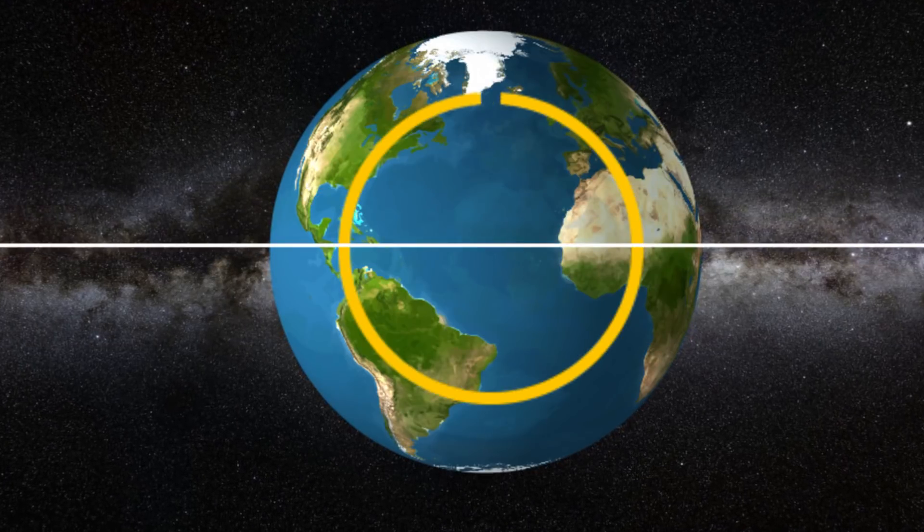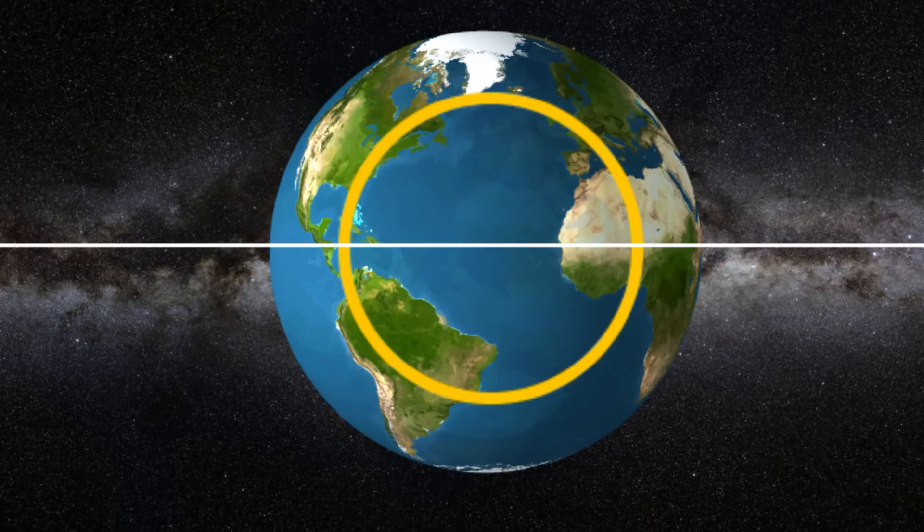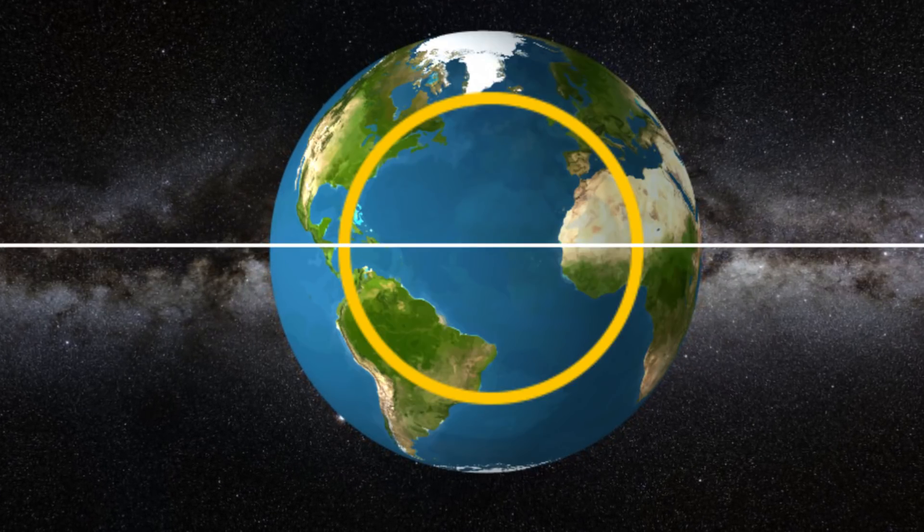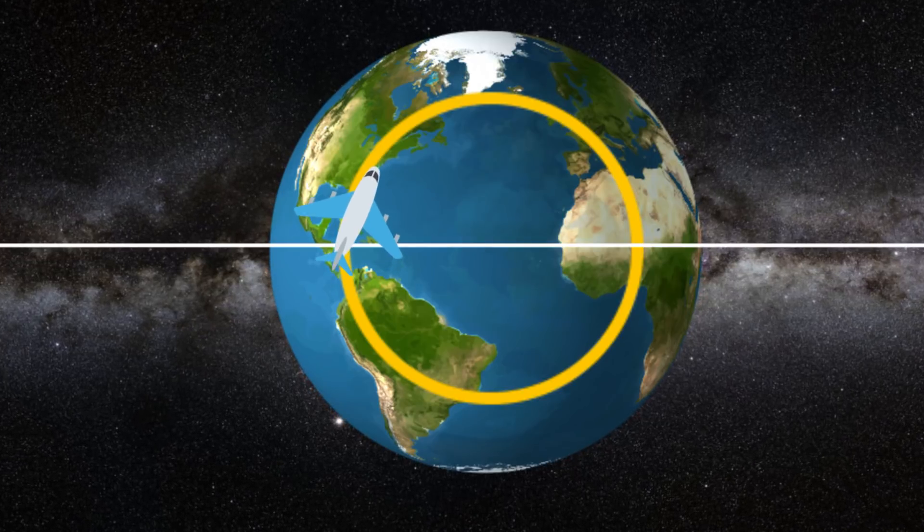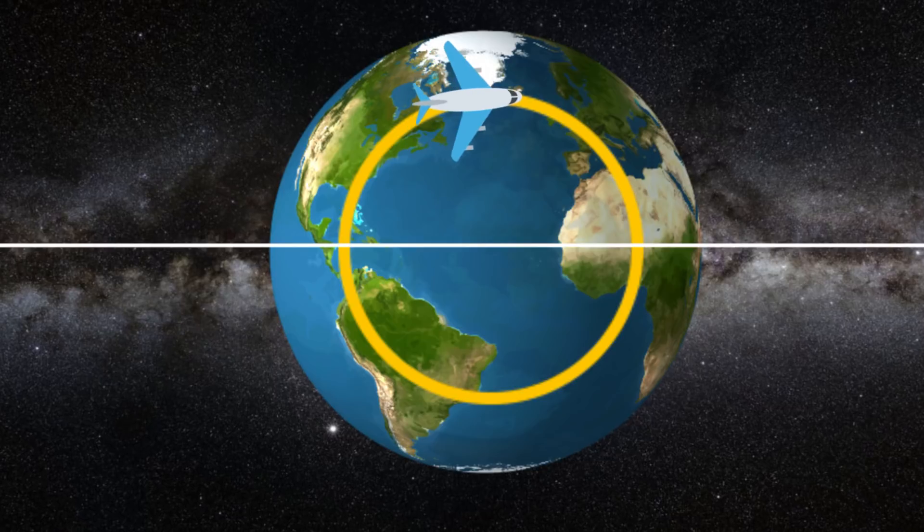This kind of path is called a Great Circle. You plot a Great Circle between two points on a sphere by imagining a plane that would slice through both points and the center of the sphere. The intersection of that plane and the Earth is called a Great Circle.